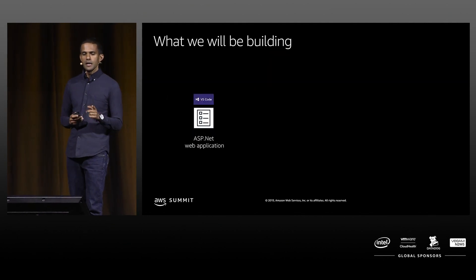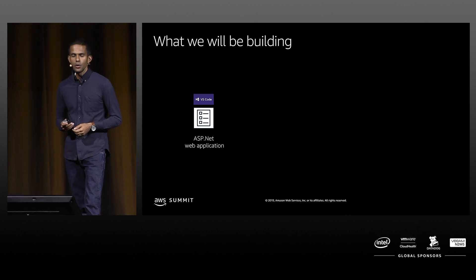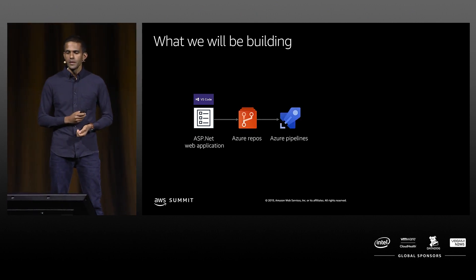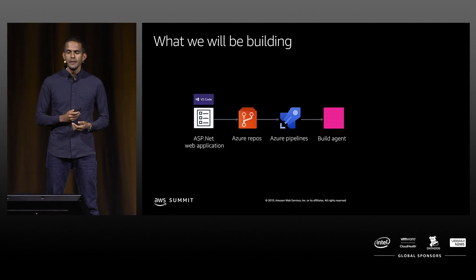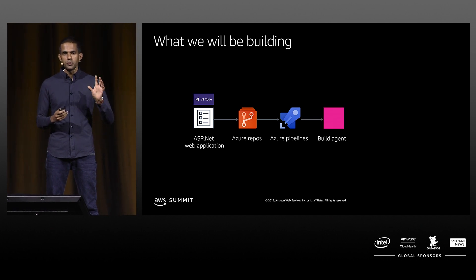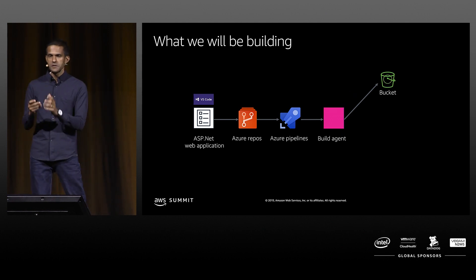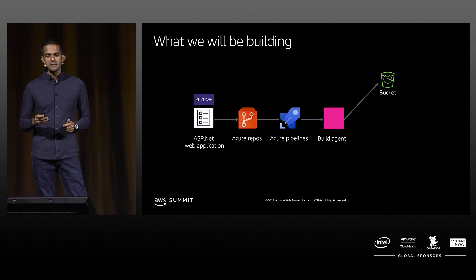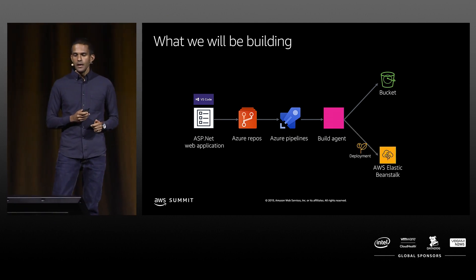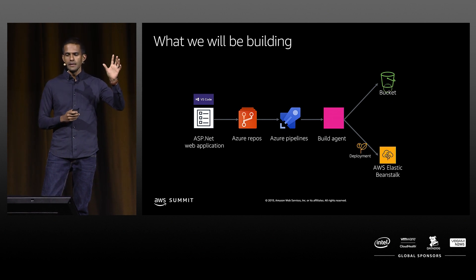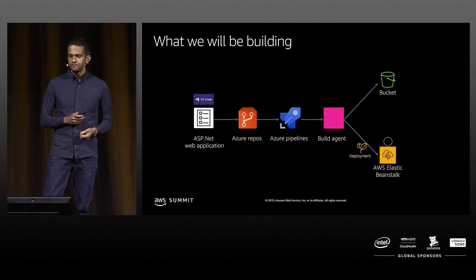What we are going to build is a simple ASP.NET Core web application, push it into an Azure Repository, kick start an Azure Pipeline, and with the help of a build agent, create the web deployment package and push it into an S3 bucket. Then we invoke the Elastic Beanstalk API, telling it there's a new zip file in the S3 bucket — take it and deploy.